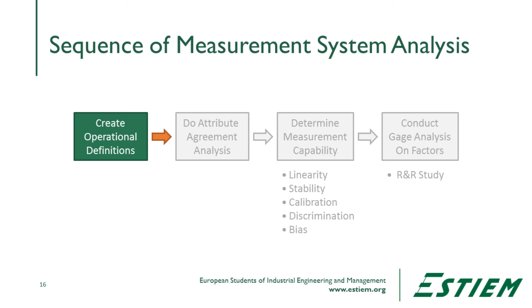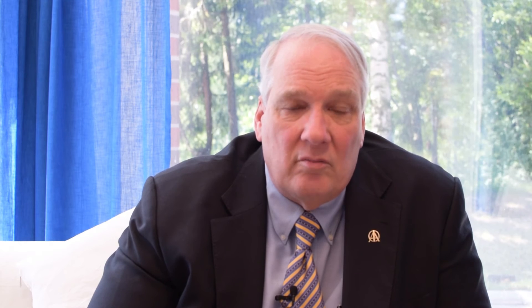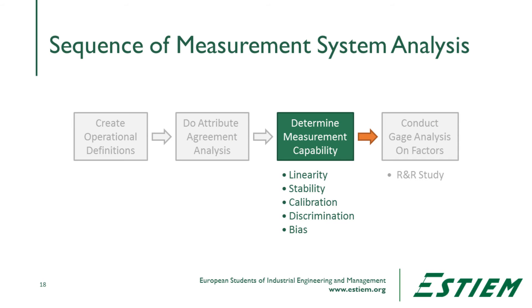How do we create a measurement system? First, we must create an operational definition — explicitly knowing what we're measuring, what the steps are, and how to take those measurements. Then we perform an attribute agreement analysis: are human beings going to code results the same way with respect to decision criteria? Do you see good and bad the same way I do? Do we interpret data the same way? This is the calibration of the human part, which addresses reproducibility.